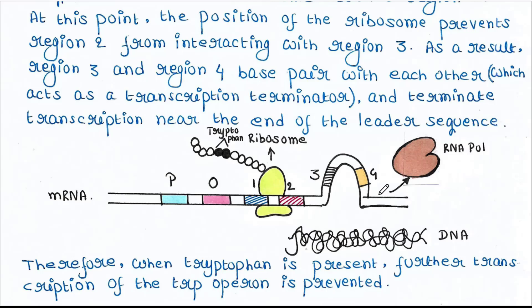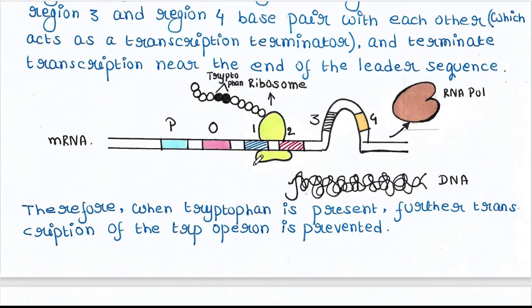Transcription is terminated near the end of the leader sequence, so RNA polymerase leaves the complex. Only a non-functional short mRNA and a small non-functional polypeptide chain are produced. Therefore, when tryptophan is present, further transcription of the trp operon is prevented.